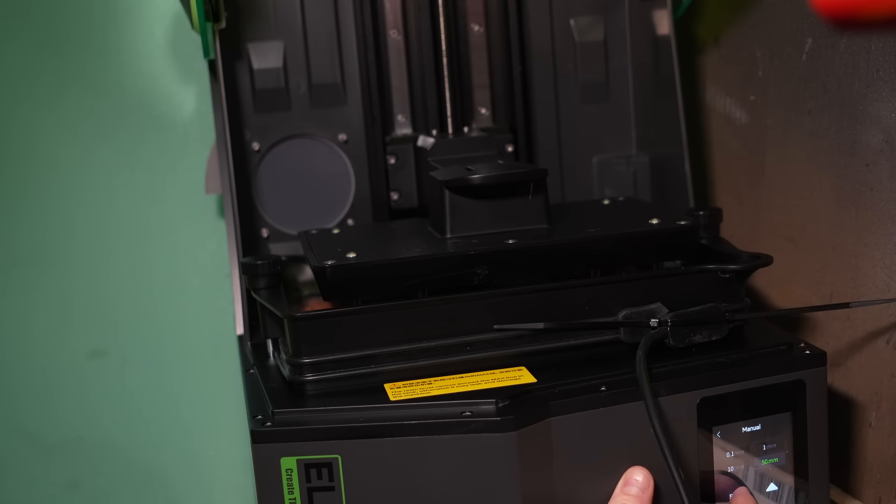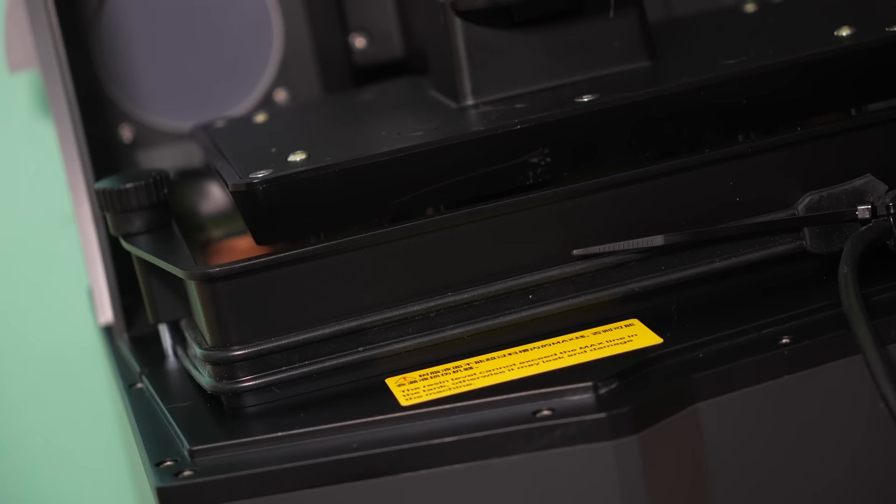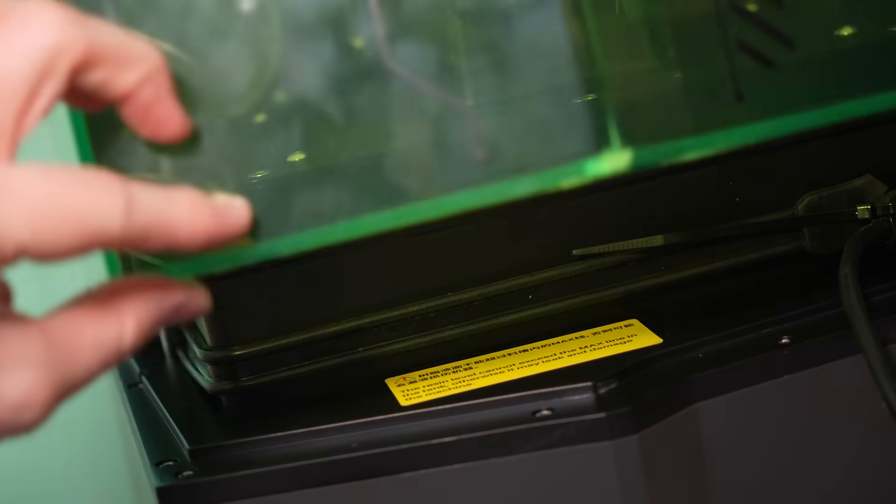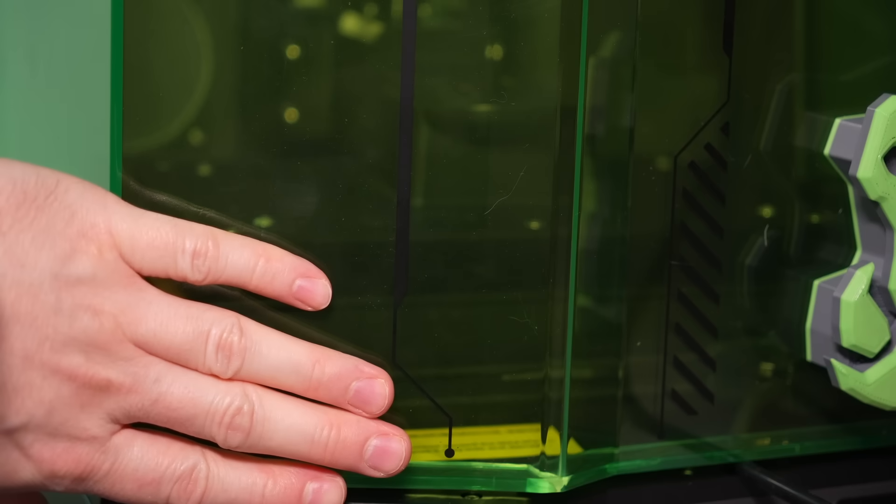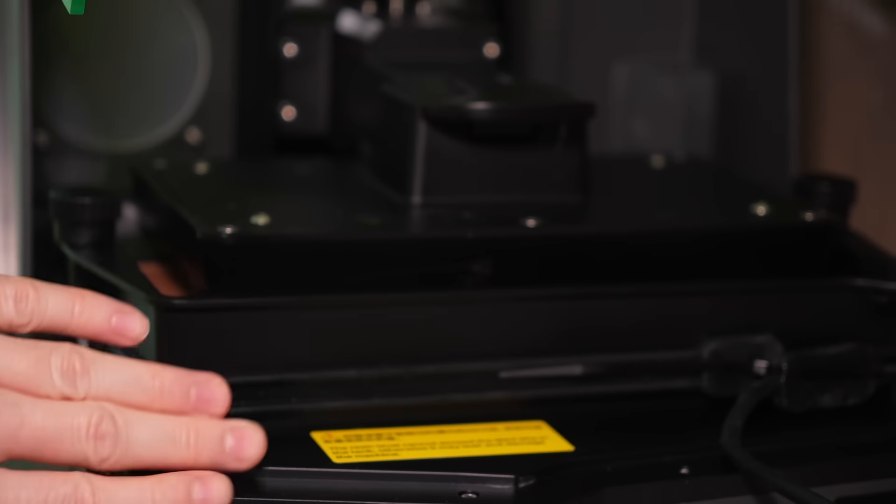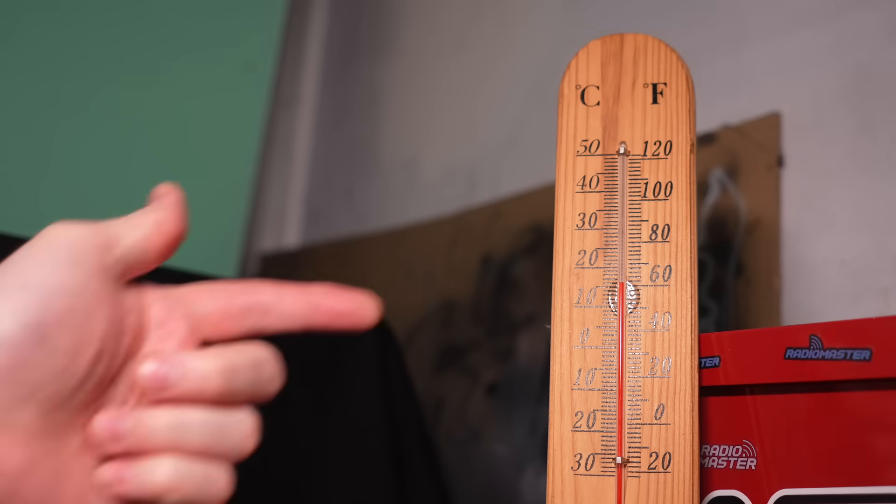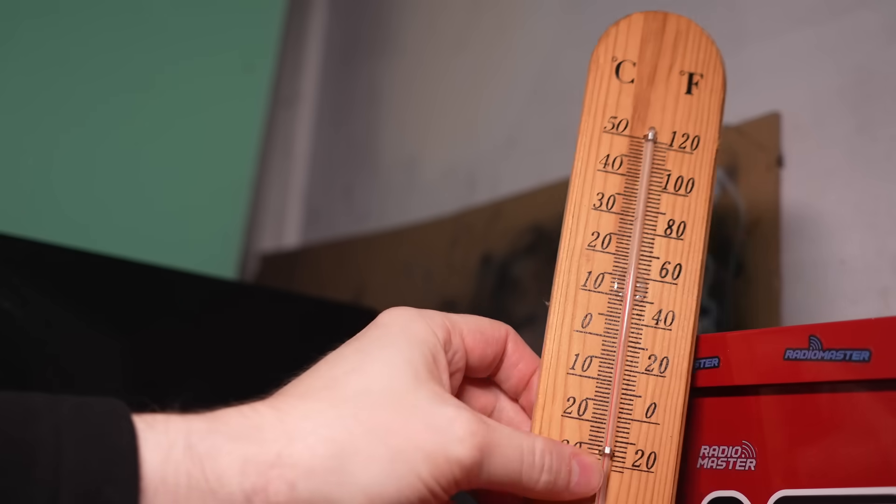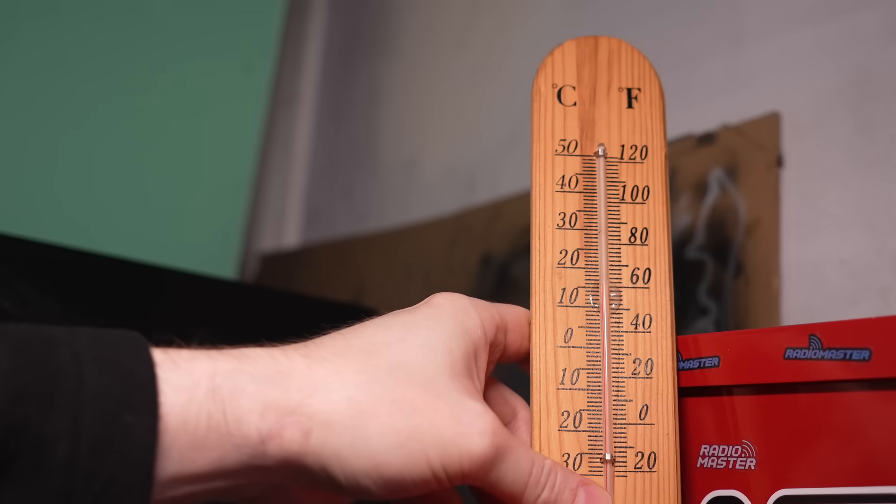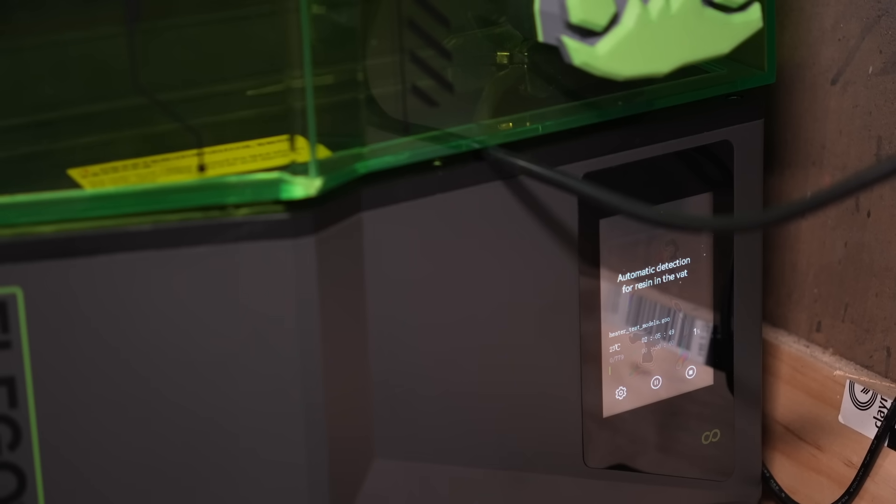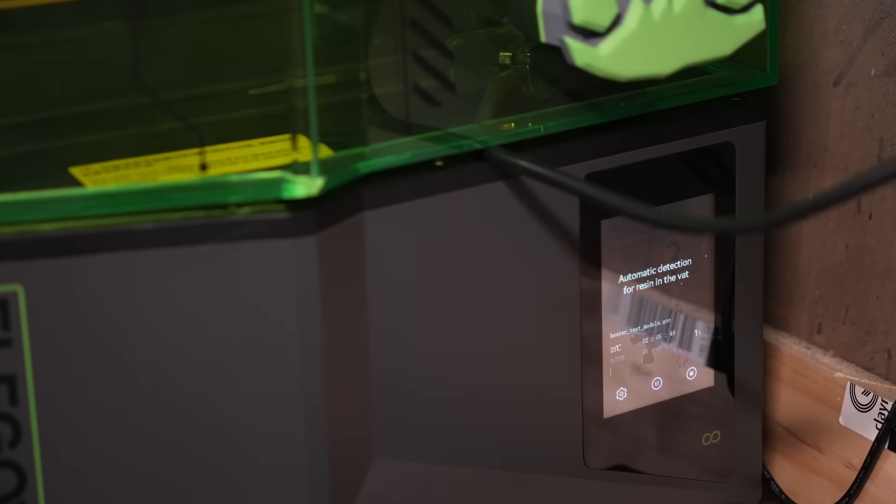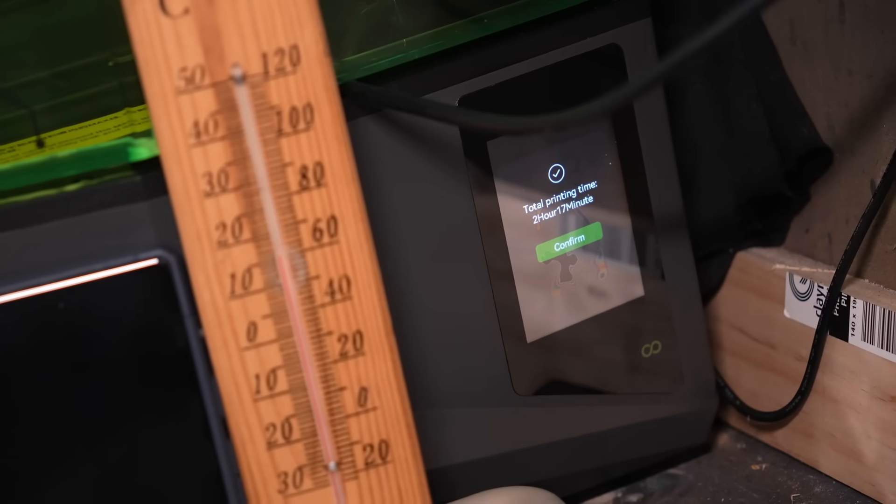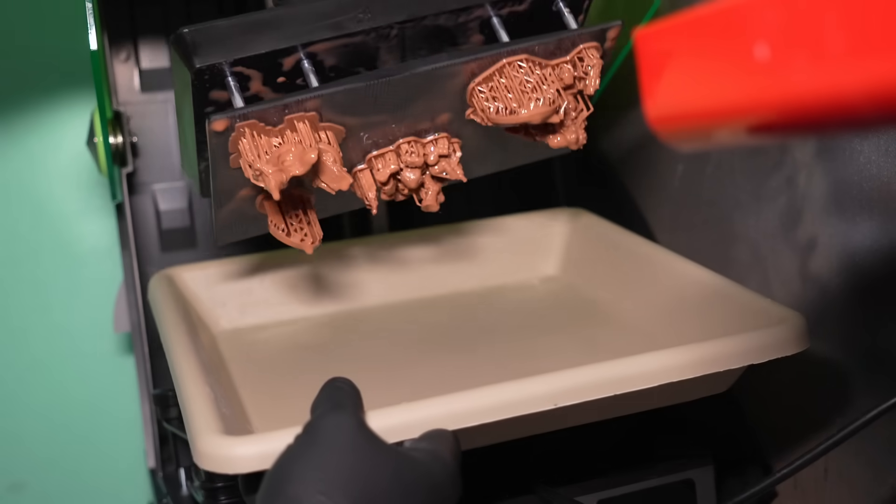With the heat belt installed I lowered the build plate into the vat just below the surface of the resin and then waited a couple of hours before starting the print. I wanted to make sure that everything that needs to be warm has plenty of opportunity to do so. Now unfortunately it was a little bit warmer this night up at around 16 degrees and you can see with the heat belt installed the printer's internal temperature is reading 23 degrees which was bloody awesome to see and this print was a complete success.